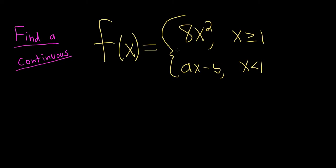So this is a piecewise function, and by themselves, the pieces are continuous. This is a parabola, it's continuous, and this is a line, and it's continuous.